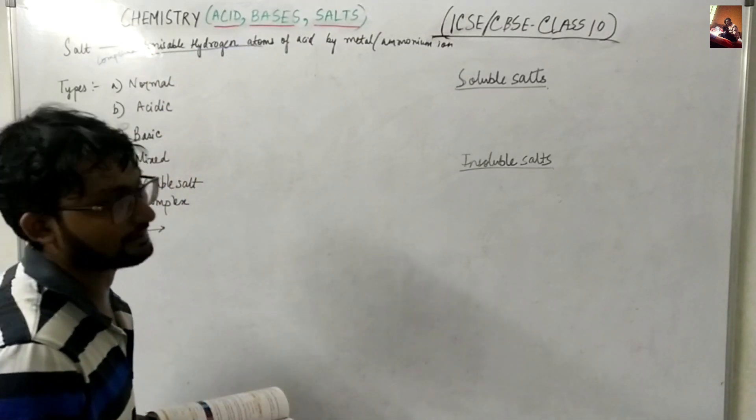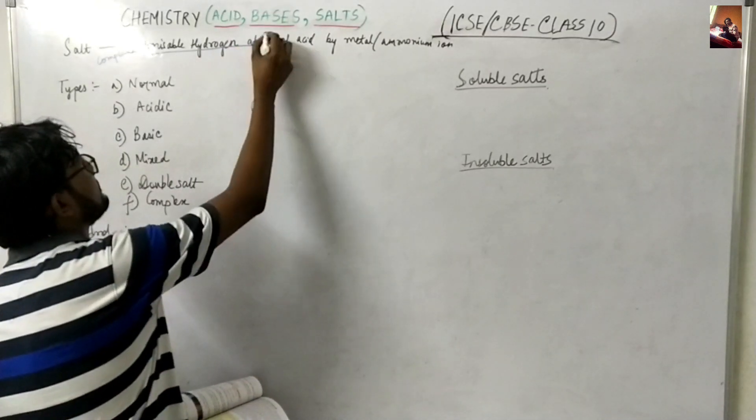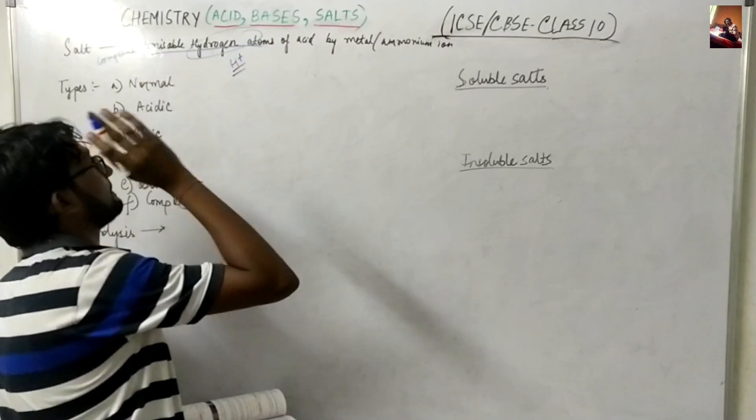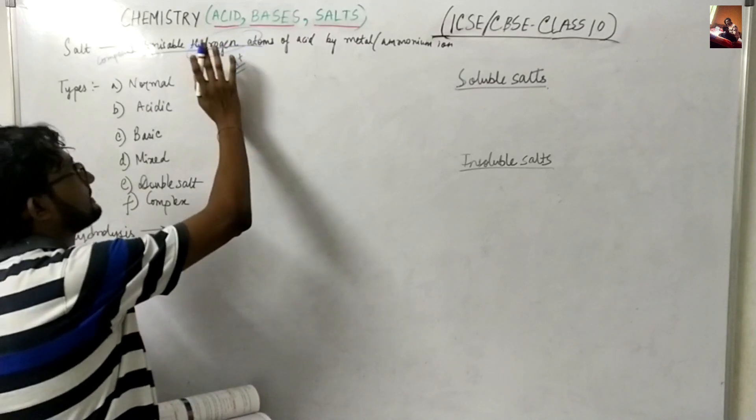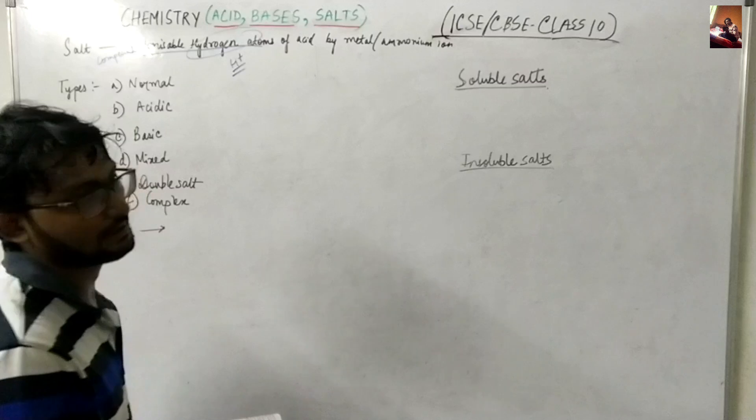So you know guys like in case of acid like H plus ion. So the particular metal or ammonium ion will replace the hydrogen of acid and it will form a compound that is known as salt.